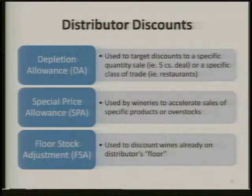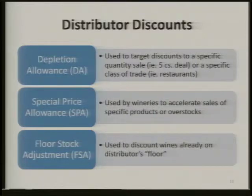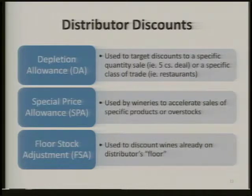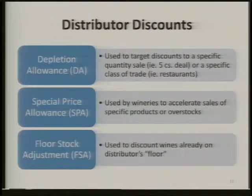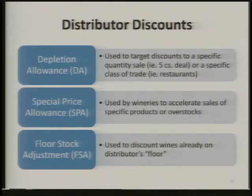An SPA — special price allowance — is usually used by wineries to accelerate sales, like when you're having a sale. Your FOB is normally $100, but if you've got 500 cases of 2011 Pinot Gris you want to move, you say your FOB is $100 but you can buy all this wine for $72. That's a special price allowance.